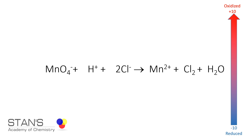First, we determine the oxidation number of manganese. We take it as x; oxygen's oxidation number is minus two, and the net charge is minus one. Therefore x minus 8 equals minus one, giving the oxidation number of manganese as plus seven.